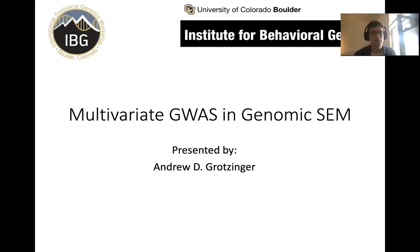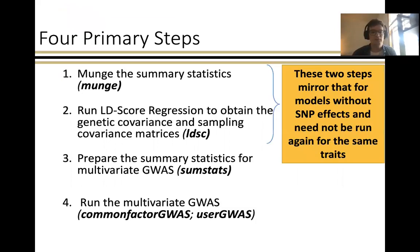In this video, we'll be talking about how to perform multivariate GWAS using GenomicSEM. Multivariate GWAS consists of four primary steps: first, munging the summary statistics; second, running multivariable LD score regression within Genomic Structural Equation Modeling to obtain the genetic covariance and sampling covariance matrices across the GWAS summary statistics. These first two steps mirror the steps for estimating a model without individual SNP effects, including for the user model and common factor functions, and do not need to be run again just for multivariate GWAS. In the third step, you'll prepare the summary statistics using the SUMSTATS function, and finally, you'll run the multivariate GWAS using common factor or user GWAS.